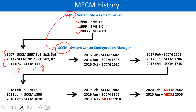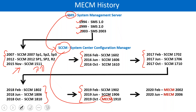So 15 is the year and 11 is the month. These are the three versions released in the year 2016, these three versions in 2017, these three versions in 2018, and these three in 2019. But from 2019 onwards they changed the name again — from SCCM to MECM, Microsoft Endpoint Configuration Manager.